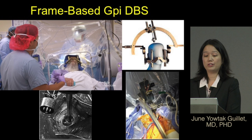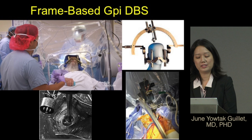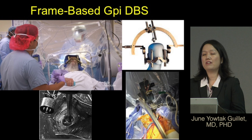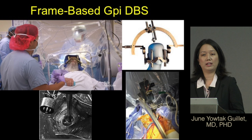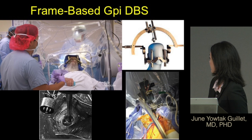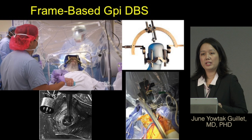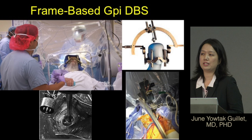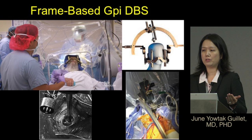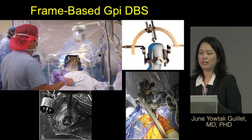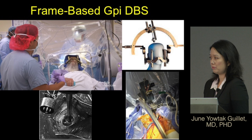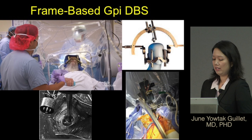At our center we prefer frame-based GPI DBS. A frame is placed on the patient before surgery, and every patient first gets a detailed MRI of their brain to identify the target. On the day of surgery, the frame is fixed to the skull via four pins, and then a special CT or MRI scan is taken with the frame on. This provides markers that are fused to the preoperative MRI to obtain the coordinates needed for the planned GPI target.